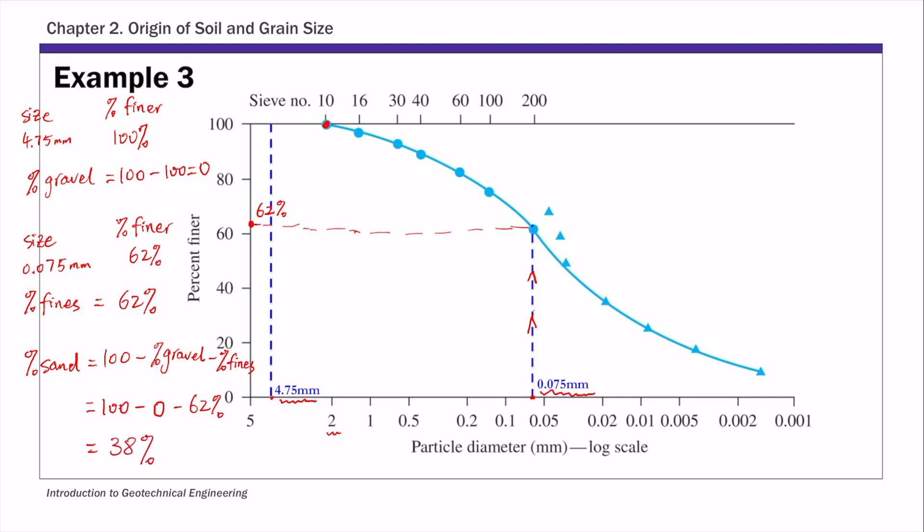So that's how you read the percentage of gravels, sand, and fines given a particle size distribution curve.